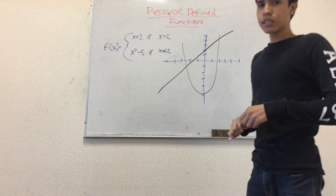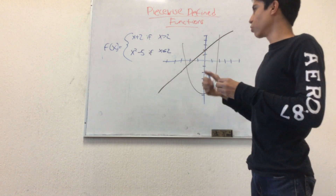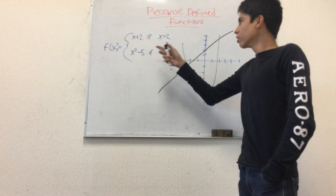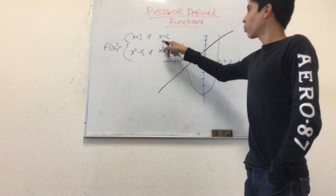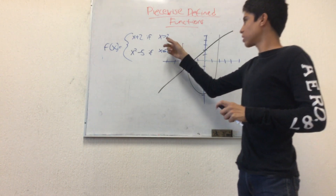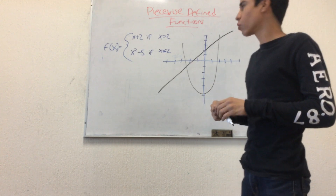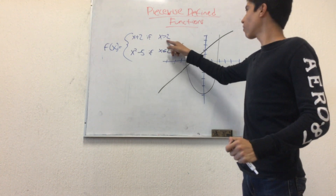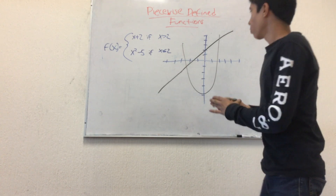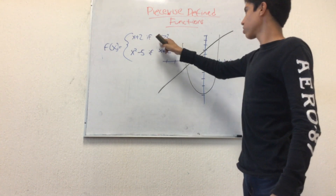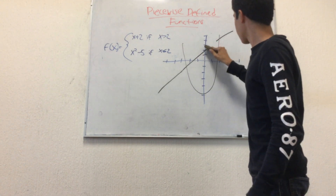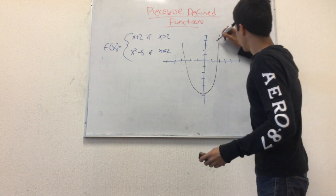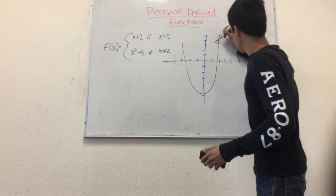Now we need to make them respect the rule they have to follow. For the first one, f of x equals x plus 2, it has to be x greater than 2. Since it's just greater and not equal, it's not touching the actual value of 2. So we erase the part of the line that does not respect the rule, and we put it with an open gap at the x value of 2.